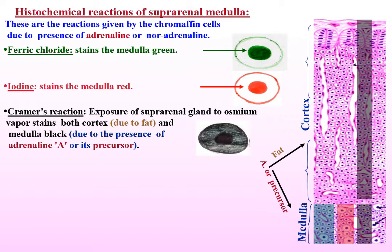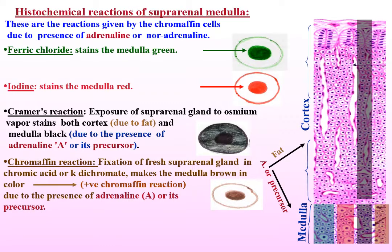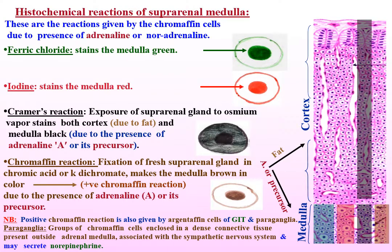Chromaffin reaction: fixation of fresh suprarenal gland in chromic acid or potassium dichromate makes the medulla brown in color — positive chromaffin reaction — due to the presence of adrenaline or its precursor. A positive chromaffin reaction is also given by argentaffin cells of the gastrointestinal tract and paraganglia. Paraganglia are groups of chromaffin cells enclosed in dense connective tissue present outside the adrenal medulla, associated with the sympathetic nervous system, and may secrete norepinephrine.